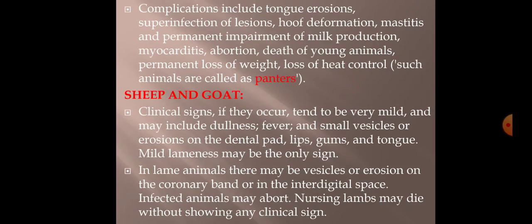In sheep and goats, clinical signs tend to be very mild. They may include dullness, fever, and small vesicles or erosions on the dental pad, lips, gums, and tongue. Mild lameness may be the only sign. In lame animals, vesicles or erosions may be found on the coronary band or in the interdigital space. Infected animals may also abort, and nursing lambs may die without showing any clinical signs.